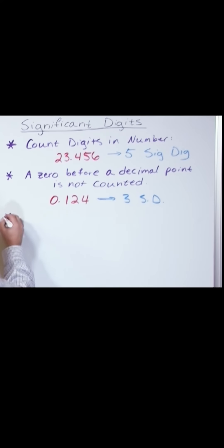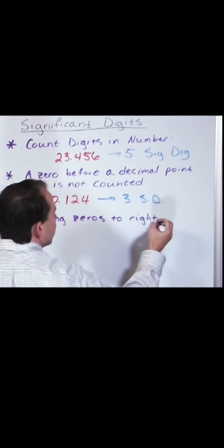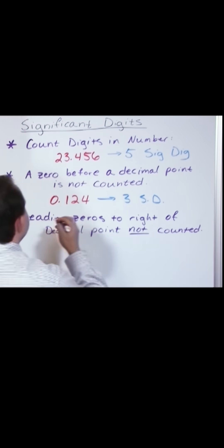Let me go ahead and give you another little rule. Leading zeros to the right of a decimal point are not counted. And again, it's dealing with zeros.